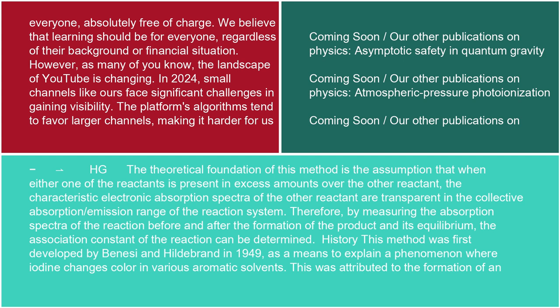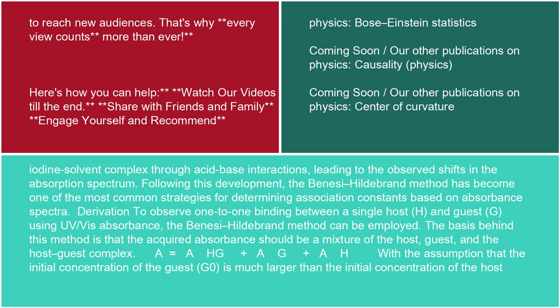This method was first developed by Benesi and Hildebrand in 1949 as a means to explain a phenomenon where iodine changes color in various aromatic solvents. This was attributed to the formation of an iodine-solvent complex through acid-base interactions, leading to the observed shifts in the absorption spectrum. Following this development, the Benesi-Hildebrand method has become one of the most common strategies for determining association constants based on absorbance spectra.